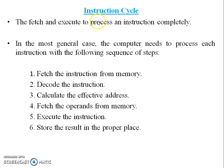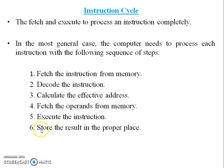Now let us discuss the instruction cycle for pipelining. To fetch and execute an instruction completely, in the most general case the computer needs to process each instruction with the following six steps: first, fetch the instruction from memory; second, decode the instruction; third, calculate the effective address; fourth, fetch the operands from memory; fifth, execute the instruction; and sixth, store the result in the proper place. This is the sequence of the instruction cycle for pipelining.